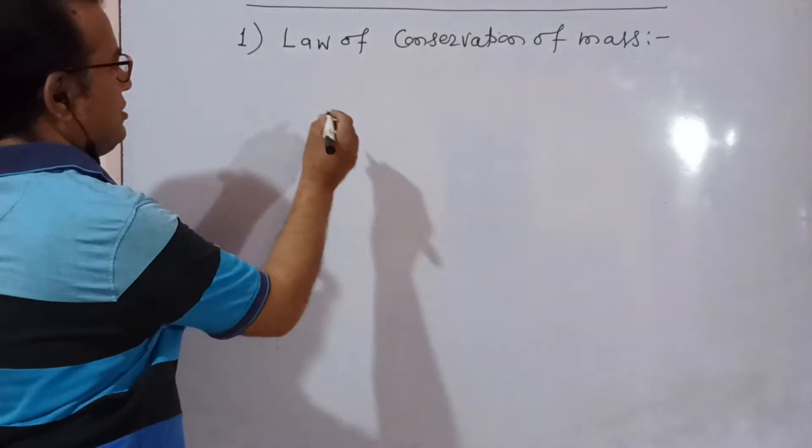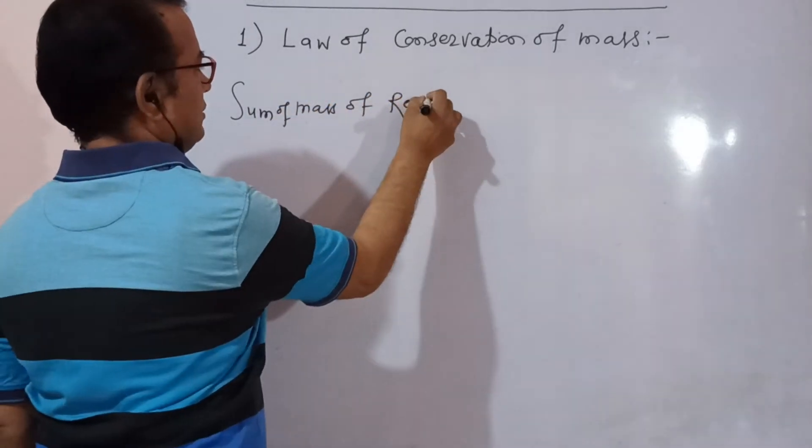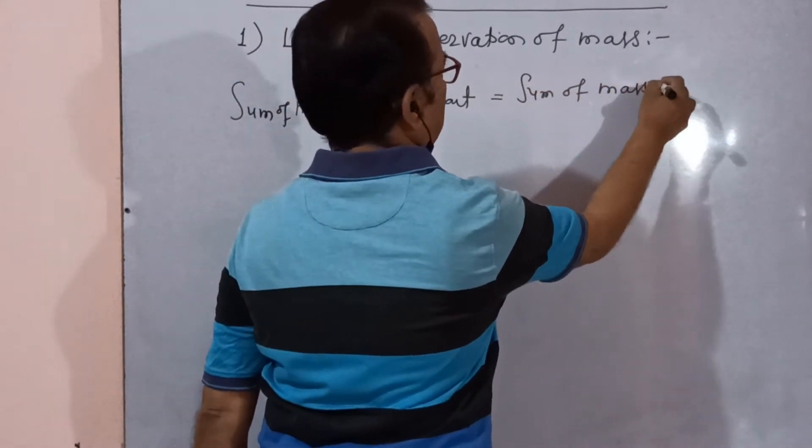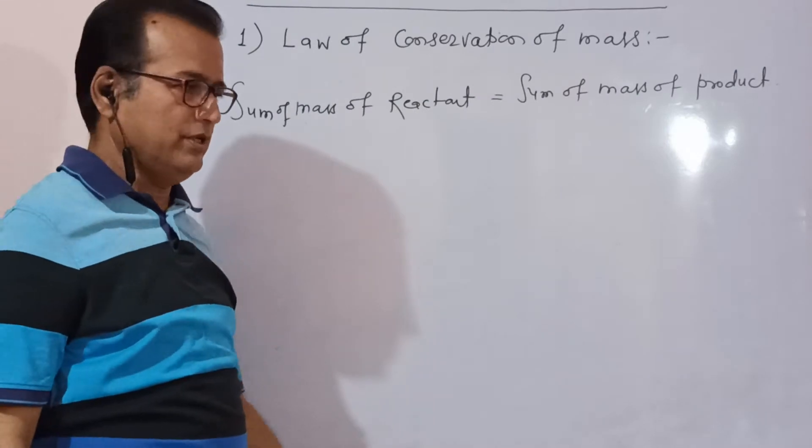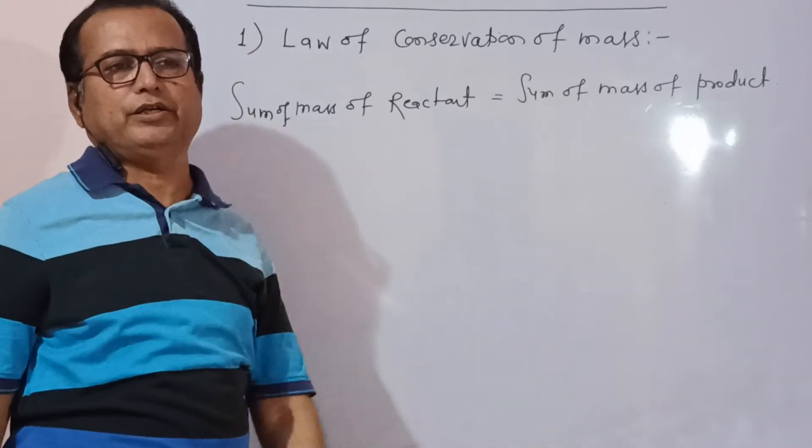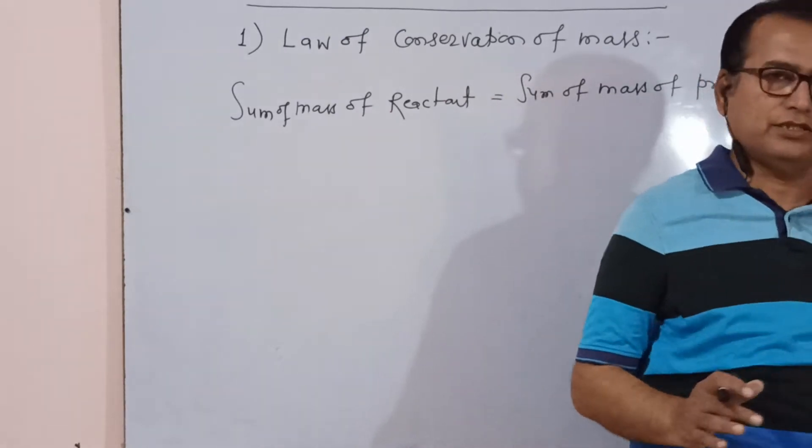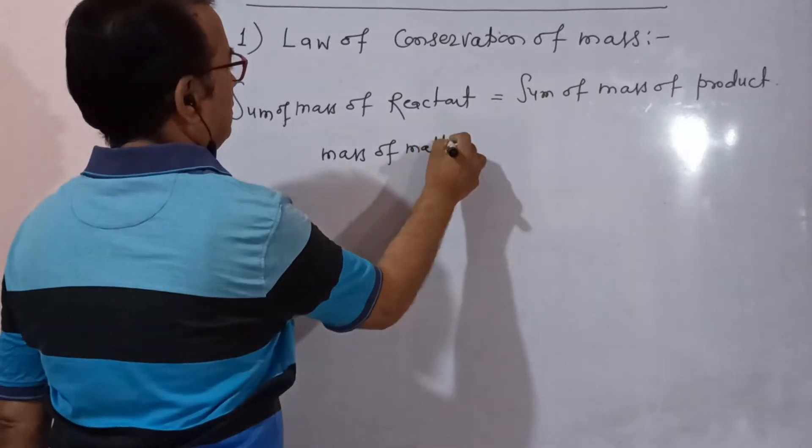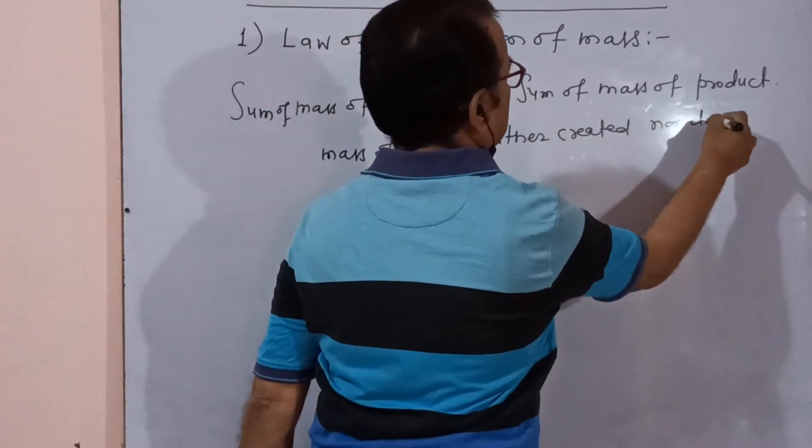Sum of mass of reactant equal to sum of mass of product means one form of matter is converted into another form of matter. Their masses never change. Mass of matter neither created nor destroyed.